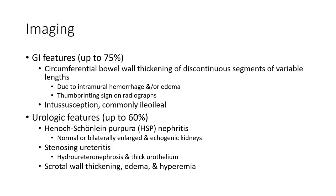GI imaging features occur in up to 75% of patients, showing circumferential bowel wall thickening or discontinuous thickening of variable length due to intramural hemorrhage and edema. String-of-beads printing signs may be seen. Intussusception is common, typically ileo-ileal.